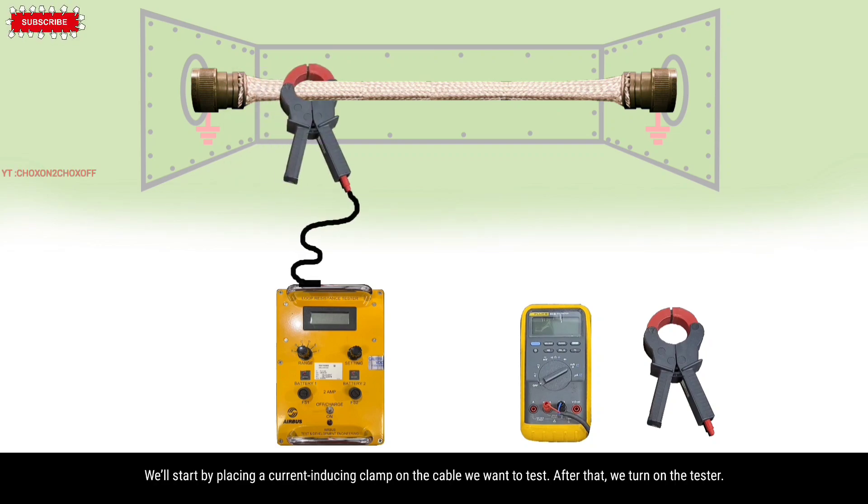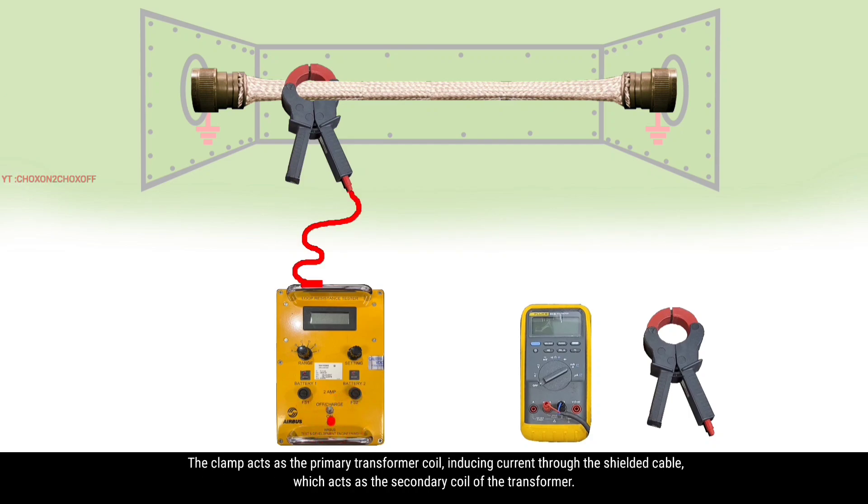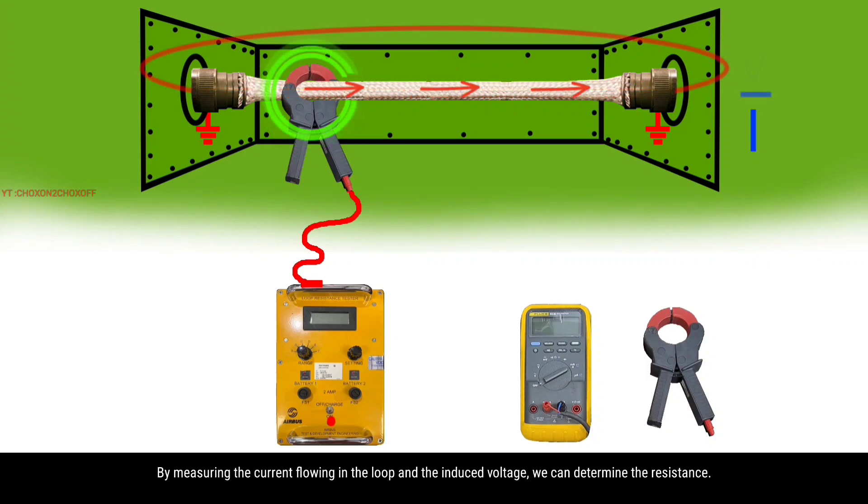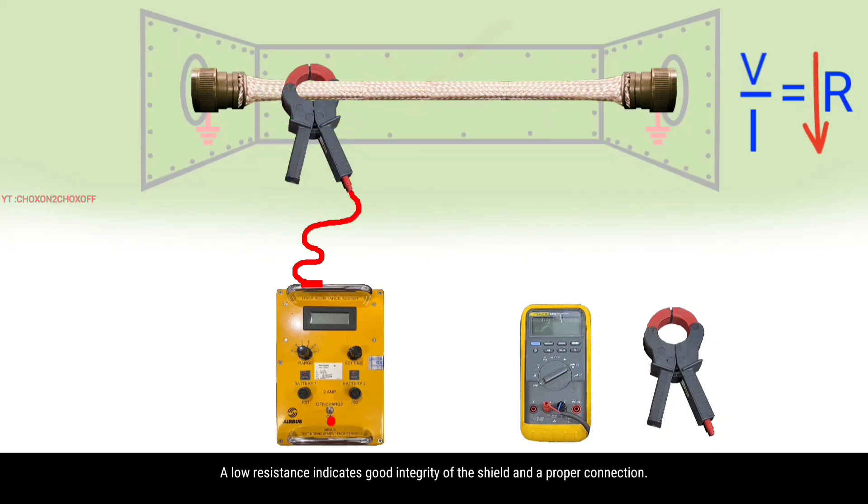We'll start by placing a current inducing clamp on the cable we want to test. After that we turn on the tester. The clamp acts as the primary transformer coil, inducing current through the shielded cable which acts as the secondary coil of the transformer. The circuit is completed via the aircraft structure, thus forming a loop. By measuring the current flowing in the loop and the induced voltage, we can determine the resistance. A low resistance indicates good integrity of the shield and a proper connection.